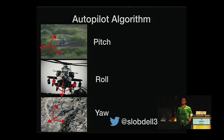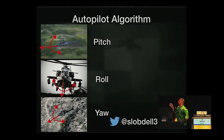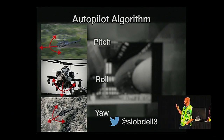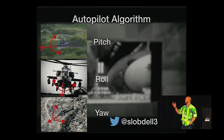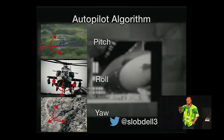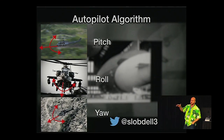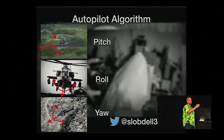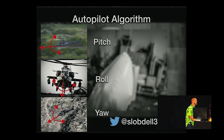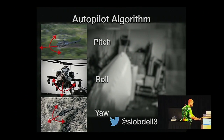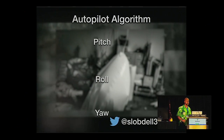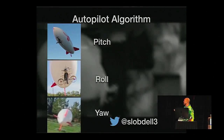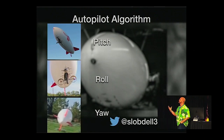With any basic aircraft, your basic controls are pitch, roll, and yaw. Pitch controls the nose of the aircraft, roll is your side-to-side, and yaw is your compass azimuth. If we have a blimp, we have those same controls and just manipulate pitch, roll, and yaw in different manners.